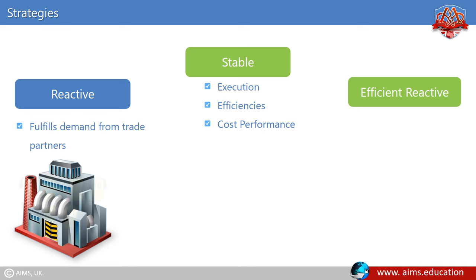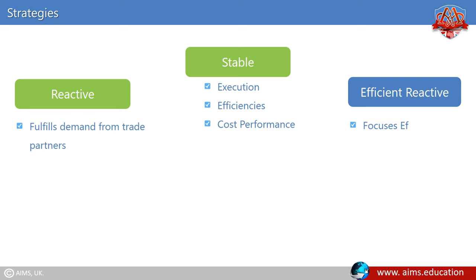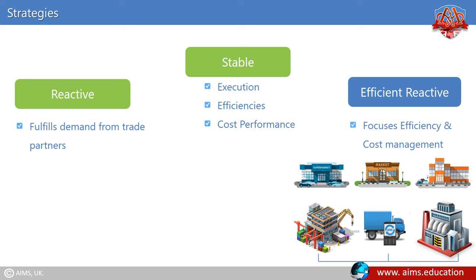Efficient reactive supply chain strategy focuses on the efficiency and cost management on the total delivered cost of finished goods. For example, in supermarket chains, distribution centers, logistics providers and manufacturers cooperate to replace the goods sold in the shops within less than 24 hours.